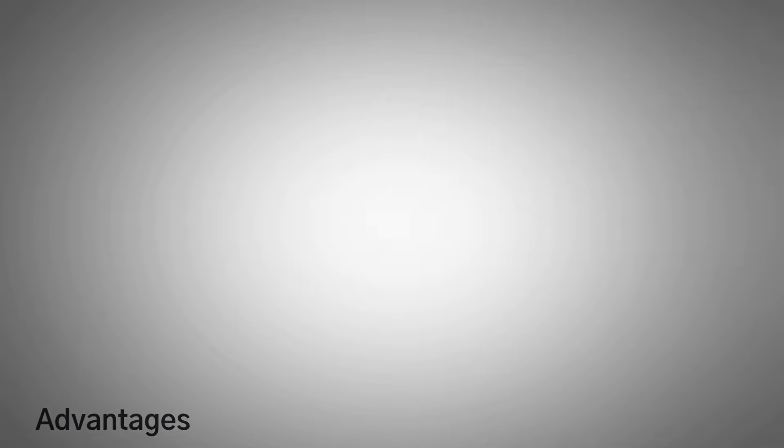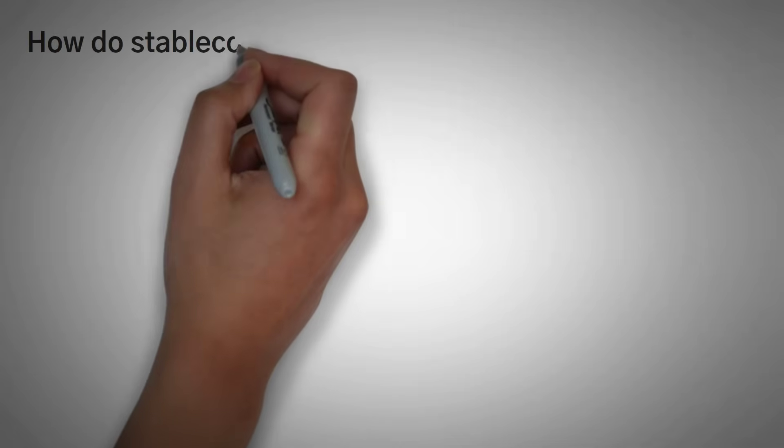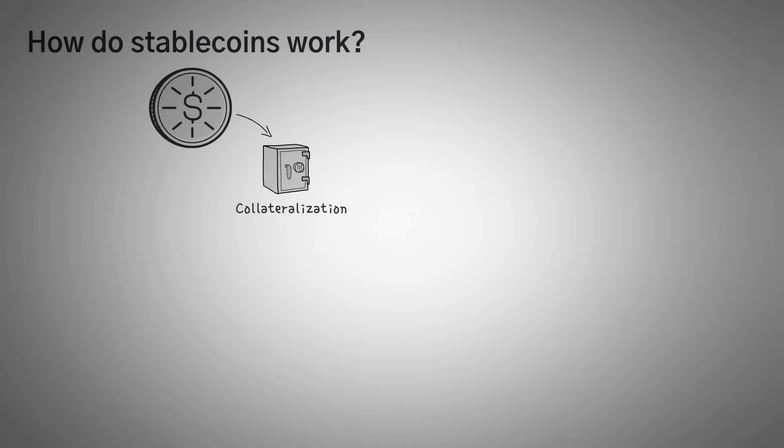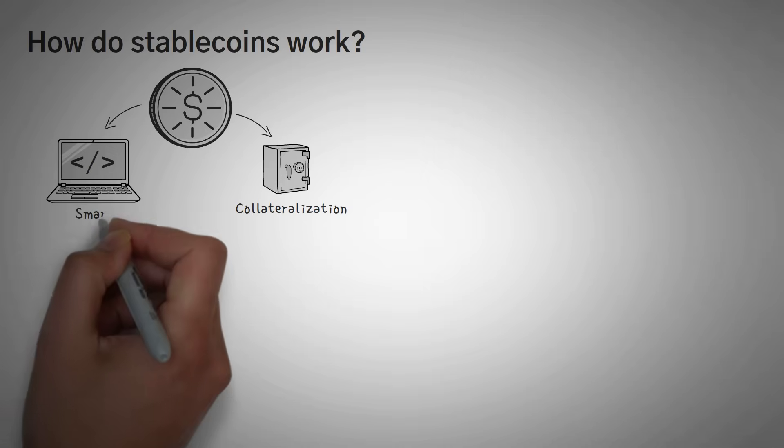Moving on, we're going to move into some technical stuff. How do stablecoins work? Well, mainly, they work in two different ways: collateralization or through algorithmic mechanisms, also known as smart contract manipulation. Those are a lot of big words, but we're going to break it down for you.